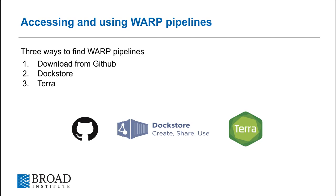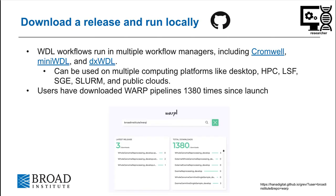Next, I'll briefly cover three ways to find and use WARP pipelines. The first is to download a GitHub release and run the pipeline on one of many supported computing platforms. Although WARP pipelines are optimized for Google Cloud, they should be runnable on platforms like the local desktop, HPC, LSF, SGE, and SLURM. To date of recording, users have downloaded WARP pipelines almost 1,400 times since our launch.